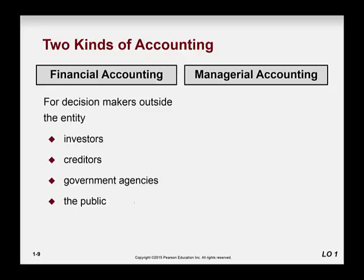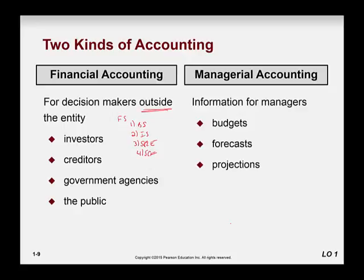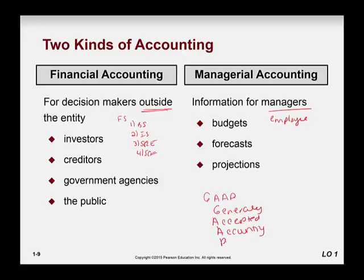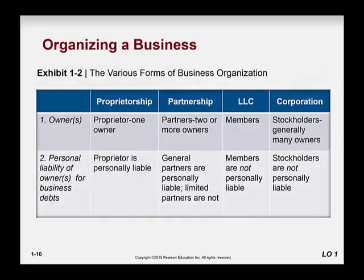So there are two types of accounting. Financial accounting is mainly for outside of the entity — this includes the financial statements I talked about earlier: the balance sheet, the income statement, the statement of retained earnings, and the statement of cash flows. This is the format in which we communicate the language of business to the outside world. Managerial accounting, on the other hand, is for those inside the organization, such as managers and employees, and this information is less regulated by GAAP — Generally Accepted Accounting Principles. GAAP is basically the standards that govern financial accounting. Managerial accounting doesn't have to follow GAAP; it's more for internal forecasting and projections and is less rigid.